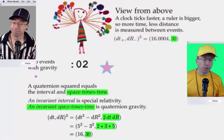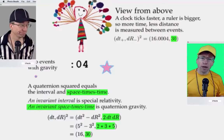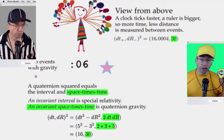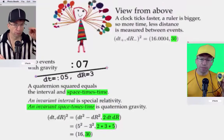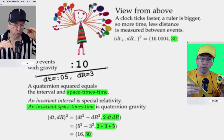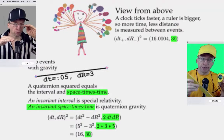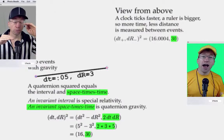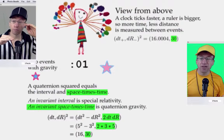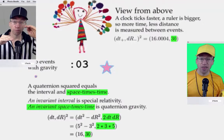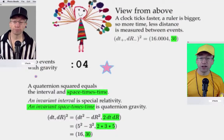But what about the interval? That's made up of a larger number minus a smaller number — minus times a minus — so the result is an interval that is actually larger than the reference observer's.